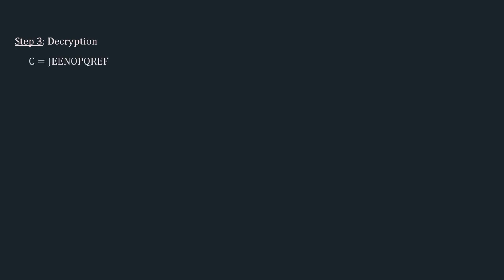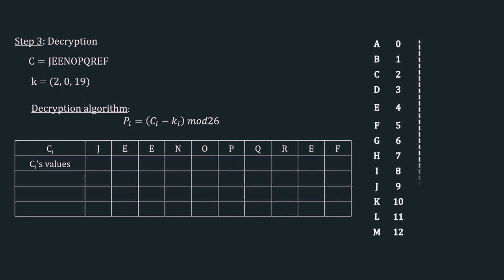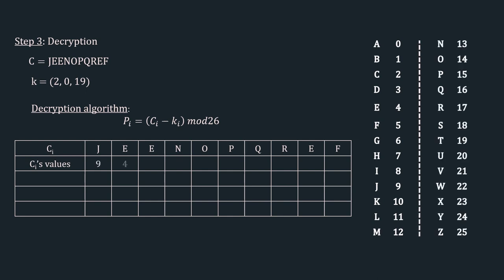Now let's move to decryption. We have the cipher text and the key stream 2, 0, 19. The decryption algorithm is Pi = Ci - Ki mod 26. We construct a table: the first row is CI with individual characters of the cipher text. The next row is the numerical values of CI using the mapping table. The key stream row KI is the same as encryption: 2, 0, 19, repeating as 2, 0, 19, 2, 0, 19, and 2.